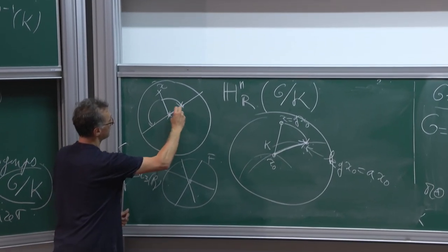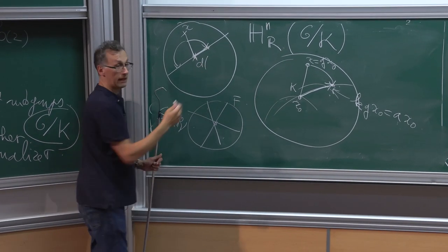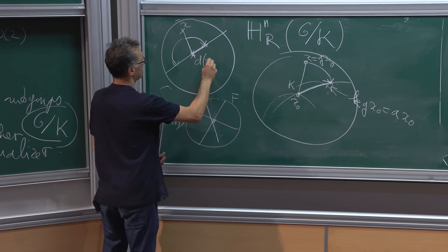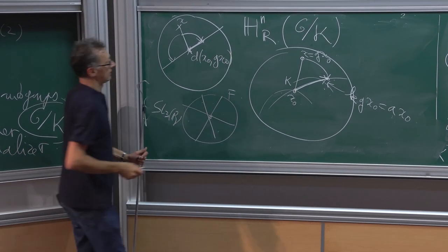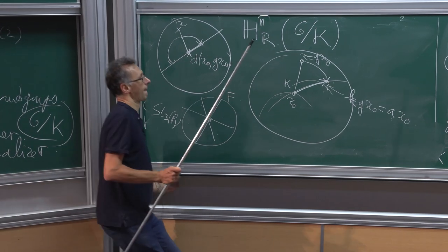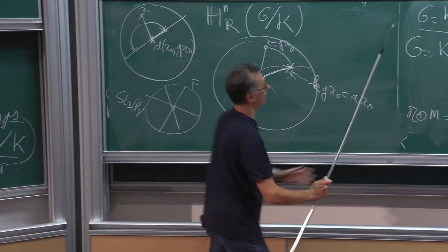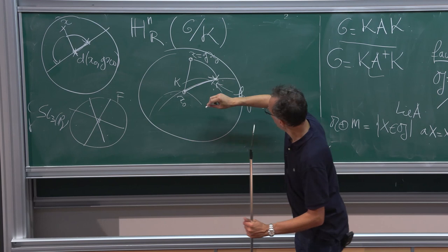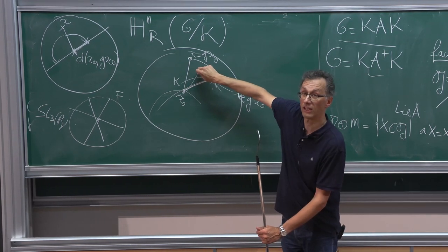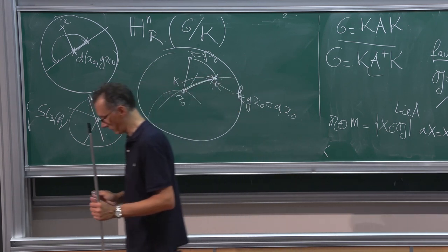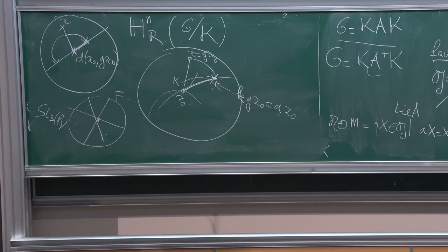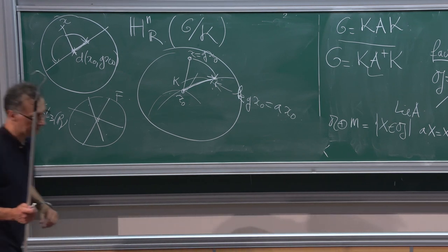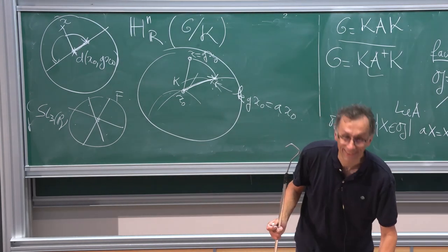This vector-valued distance — the element a ∈ A⁺ in the Cartan decomposition — will be seen and used in the next talks. I will stop here. Thank you very much.